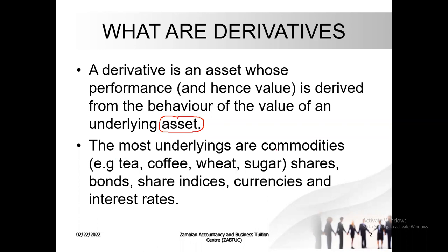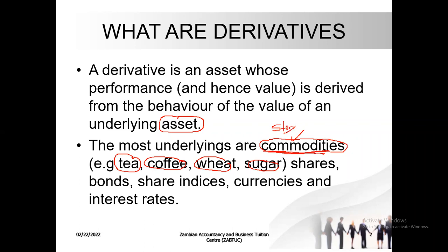The most common underlyings are commodities such as tea, cotton, wheat, and sugar. Commodity futures make the story of futures much easier to understand what is happening, and I'll use an example of commodity futures to also help you see the point.